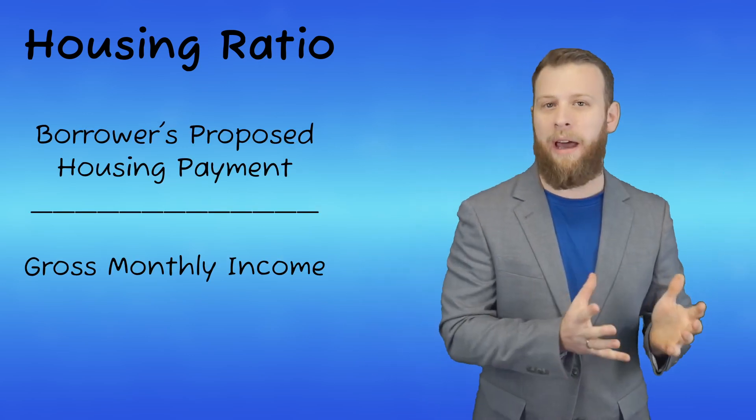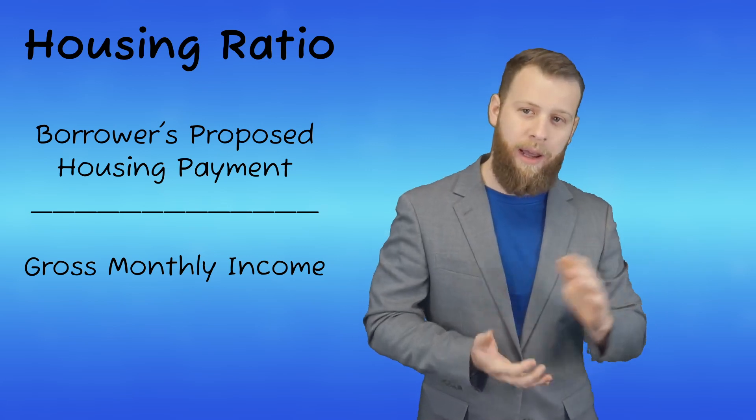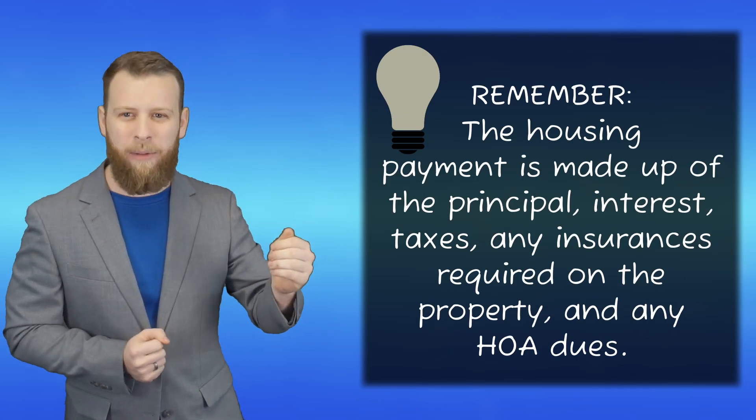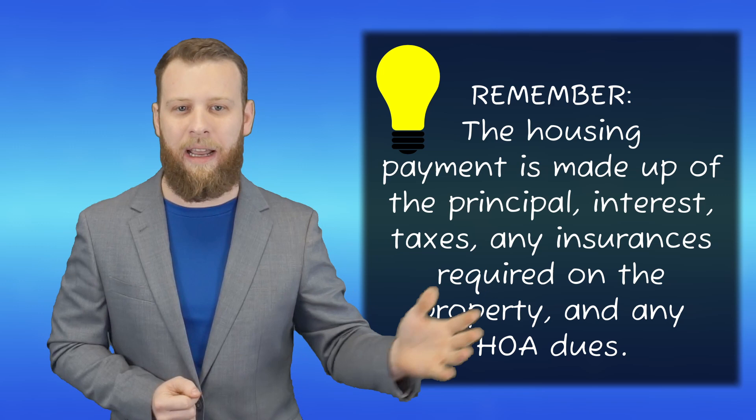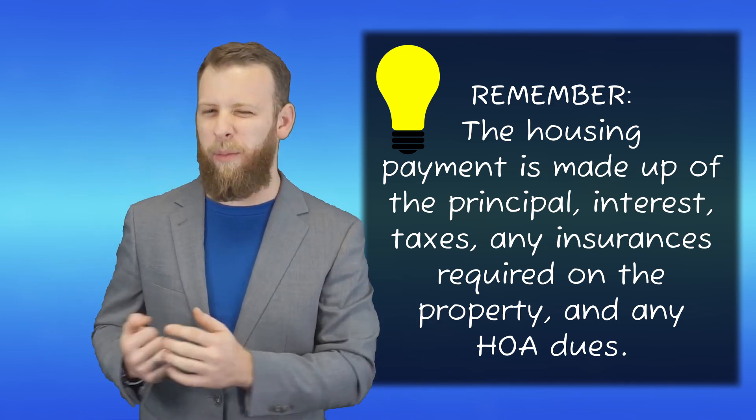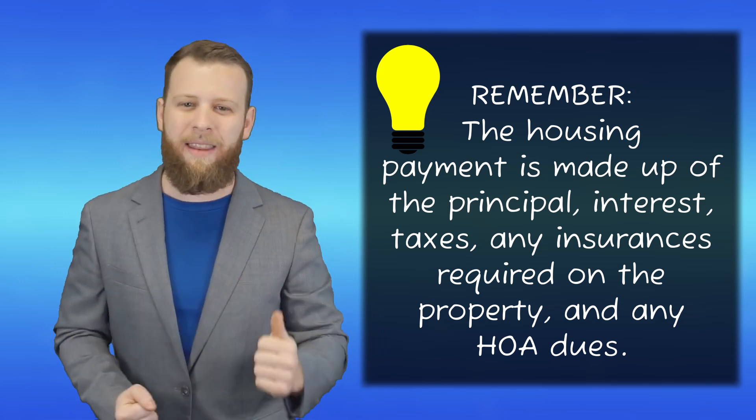To calculate a housing ratio, we're going to take the borrower's proposed housing payments, whatever they're going to have on the house that they're trying to buy or refinance, and divide that by the borrower's gross monthly income. Remember, the housing payment is going to be made up of the principal, the interest, the taxes, and any insurances required on that property. If the home has a homeowners association, those dues are going to be included in that front-end ratio as well.